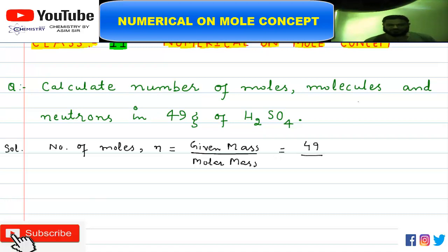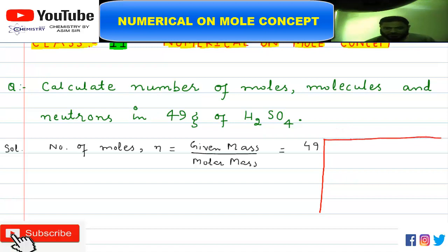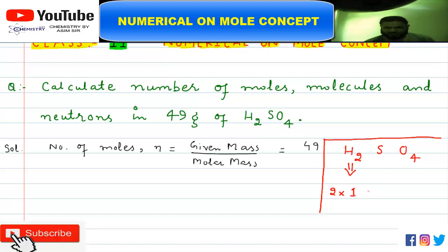Now we have to calculate the molar mass of sulfuric acid, which is H₂SO₄. The atomic mass of hydrogen is 1U and we have two hydrogen atoms, so that gives 2×1. Then for sulfur, the atomic mass is 32U.